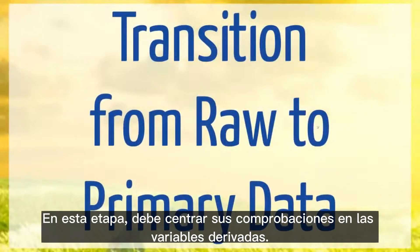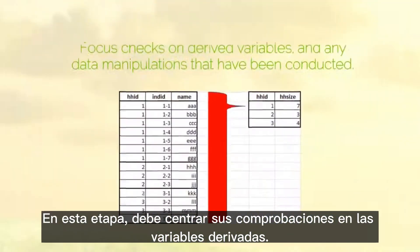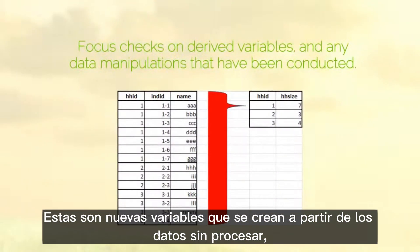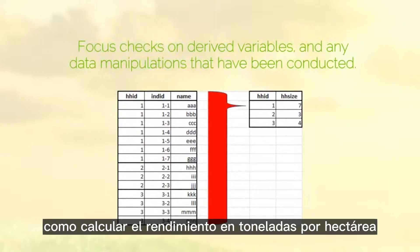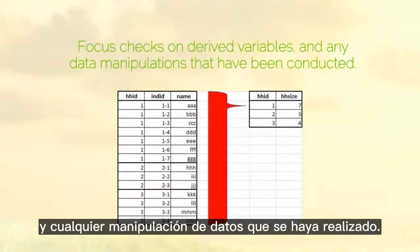At this stage you should focus your checks on any derived variables. These are new variables you create based on the raw data, such as calculating the yield in tonnes per hectare from the original yield data and plot size, and any data manipulations that have been conducted.